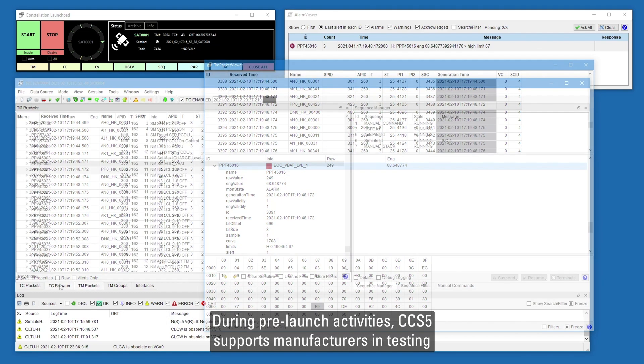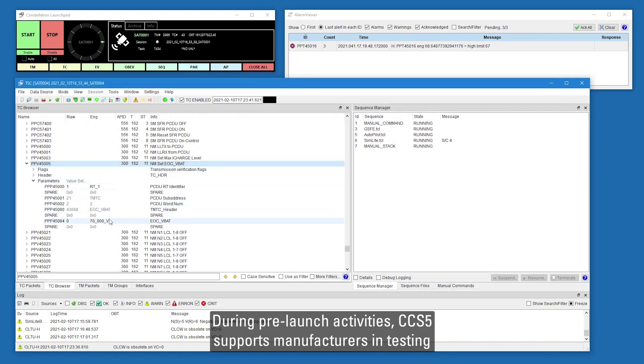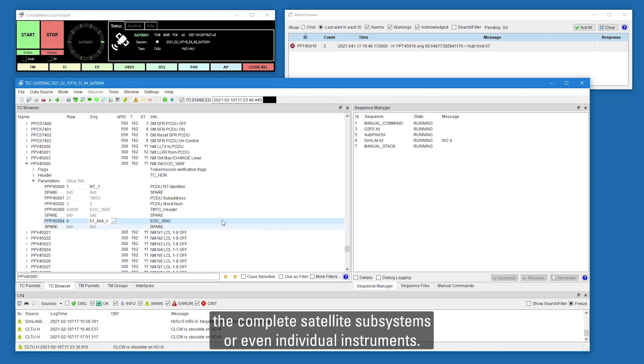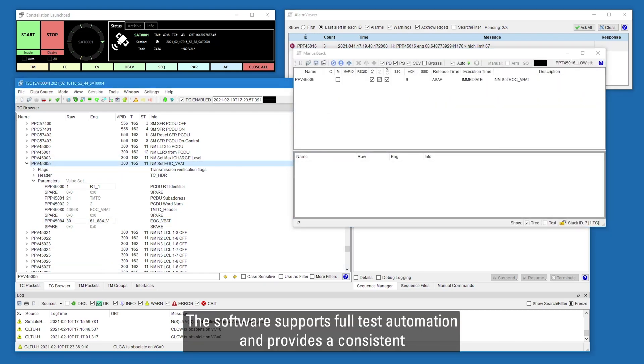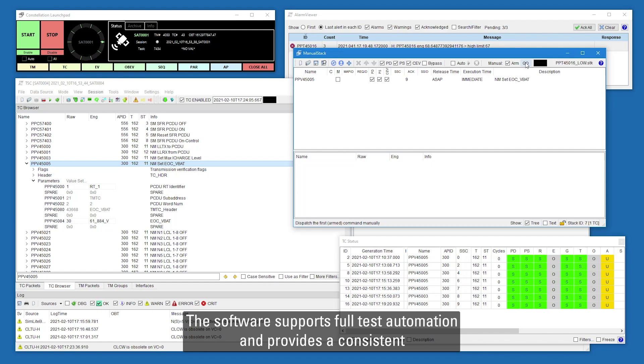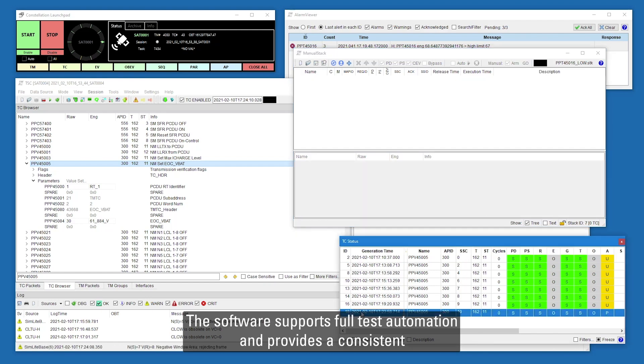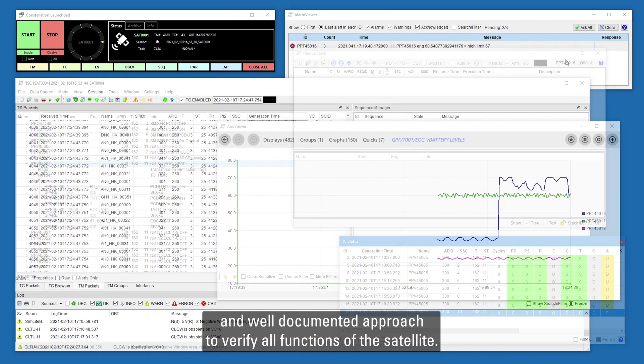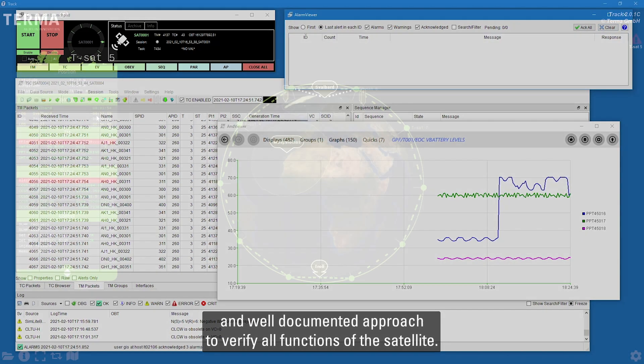During pre-launch activities, CCS-5 supports manufacturers in testing the complete satellite, subsystems, or even individual instruments. The software supports full test automation and provides a consistent and well-documented approach to verify all functions of the satellite.